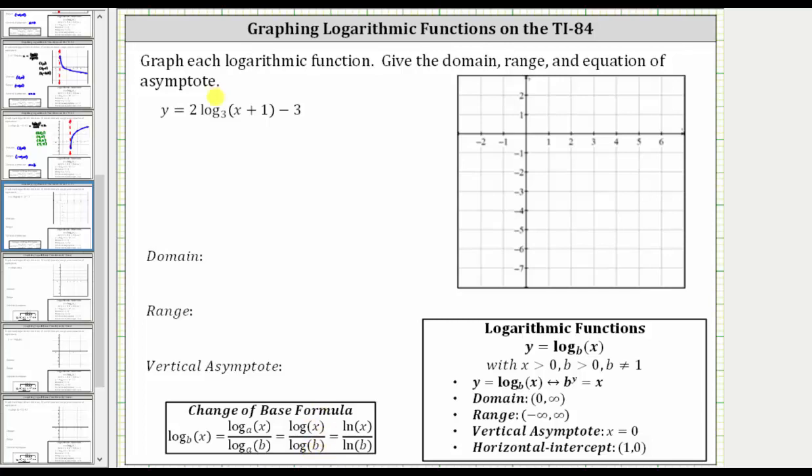So y equals two times log base three of the quantity x plus one minus three is equal to two times the common log of x plus one divided by the common log of three, and then we have minus three. We could also write this two in the numerator.